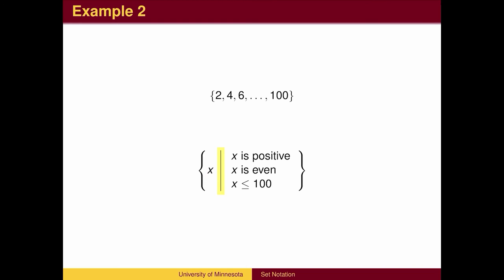The bar is a symbol that means such that, although sometimes other symbols are used. To the right of the bar, we list the conditions that x must follow. This gives us enough information to determine which numbers are valid as values for x, and therefore are elements of the set.